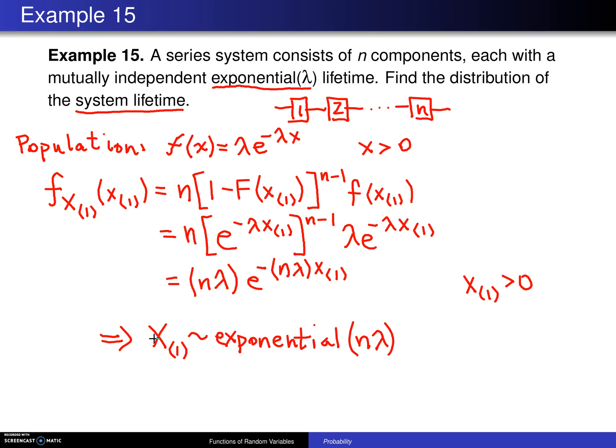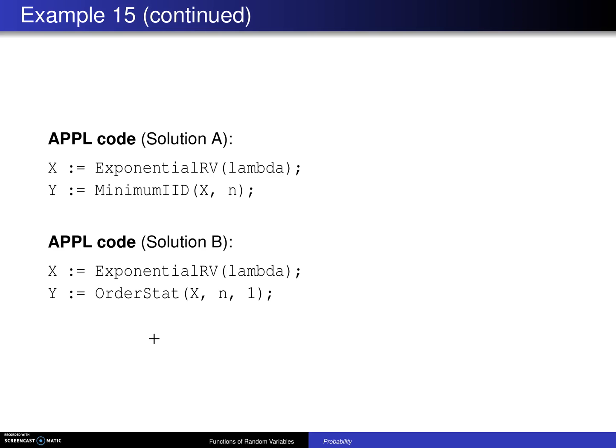On the next page, this is done in APPL, and there are two solutions. One is to set x to an exponential random variable with parameter lambda and use a procedure known as MinimumIID to get y, and that will be the exponential n lambda.